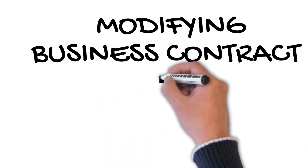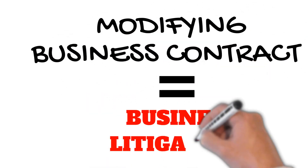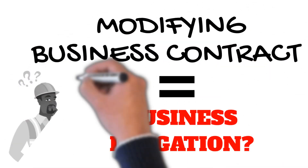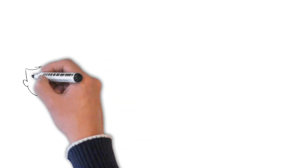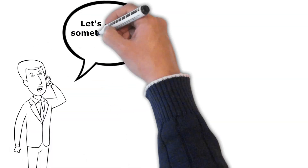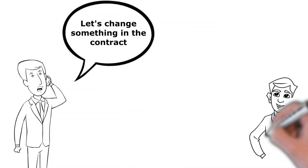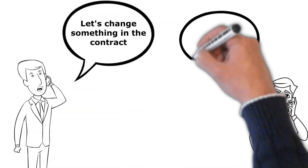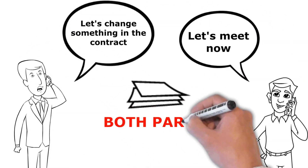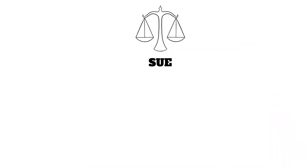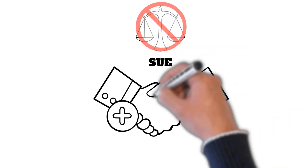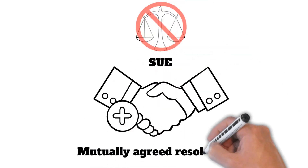Will modifying a business contract result in business litigation? If you need to alter something in a business contract, the first step is to try to get an agreement with the other parties involved in the contract. You may not need to sue if you can achieve a mutually agreed resolution to your contract disagreement.